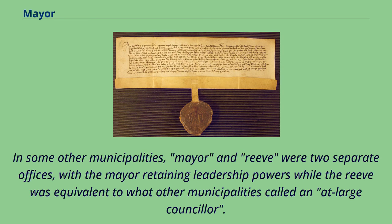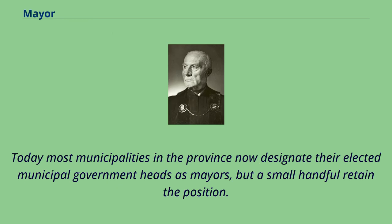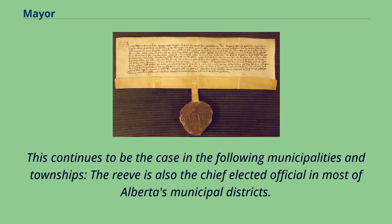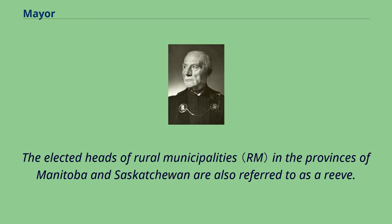In some other municipalities, mayor and Reeve were two separate offices, with the mayor retaining leadership powers while the Reeve was equivalent to what other municipalities called an at-large councillor. Today most municipalities in the province now designate their elected municipal government heads as mayors, but a small handful retain the position of Reeve. The Reeve is also the chief elected official in most of Alberta's municipal districts, and the elected heads of rural municipalities in Manitoba and Saskatchewan are also referred to as a Reeve.